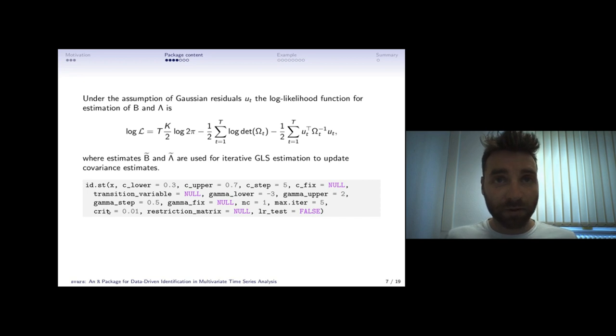What you see in the gray box is how we implemented this in R. All our identification models start with ID for identification and then the abbreviation ST stands for smooth transition. You see here a lot of different input parameters.